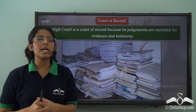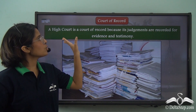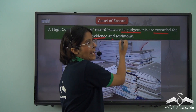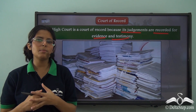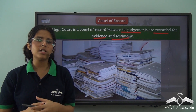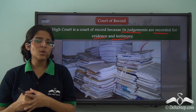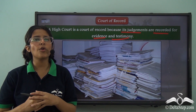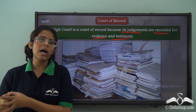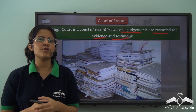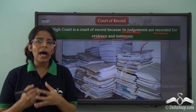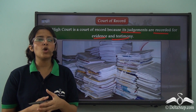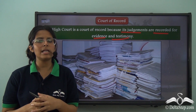A High Court is also known as a Court of Record because its judgements are recorded for evidence and testimony. The decisions or judgements passed by the High Courts can be captured or preserved for future reference. All judgements made in the High Court are binding on all the lower or subordinate courts, but they are not binding on other High Courts. They can still be produced in court in support of an argument when similar cases come to the High Court or lower courts in the future.